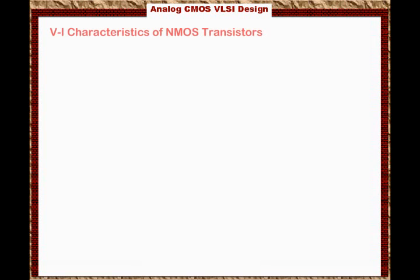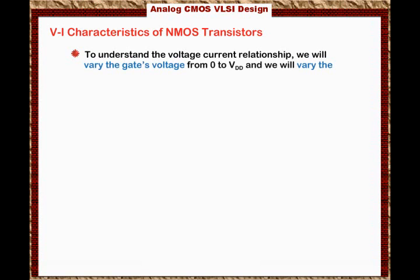We are ready to discuss the VI characteristics of the NMOS transistor. We will develop an understanding of the relationship between the voltages and the currents. To do this, we will vary the gate voltage from 0 to VDD, and we will also vary the drain voltage from 0 to VDD.